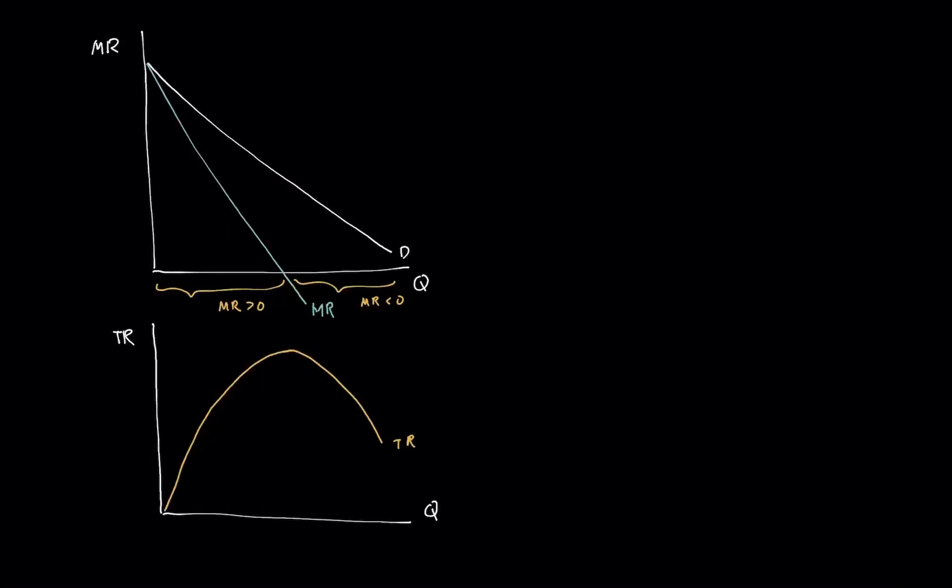Now let's illustrate something. So I'm going to draw a line which bisects this one at this point. So when marginal revenue is equal to zero, I'm going to draw a line.